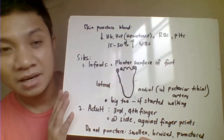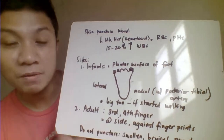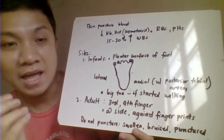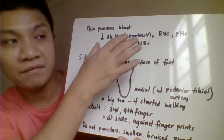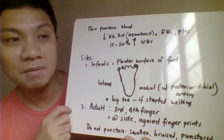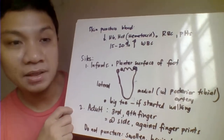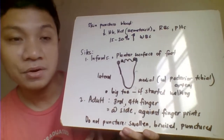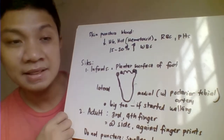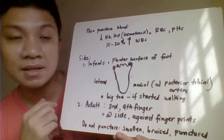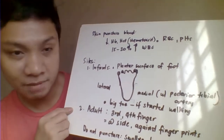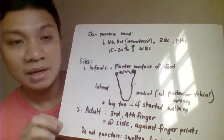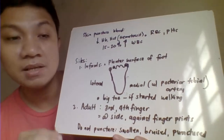Comparing blood collected by skin puncture with whole blood: the blood collected through skin puncture would have decreased results for RBC count, hemoglobin, hematocrit, and platelet count compared with whole blood collected by venipuncture. On the other hand, skin puncture blood would have 15 to 20% higher WBC count compared with whole blood. That is why when doing a skin puncture, you need to note in the result form that the blood was collected by skin puncture.